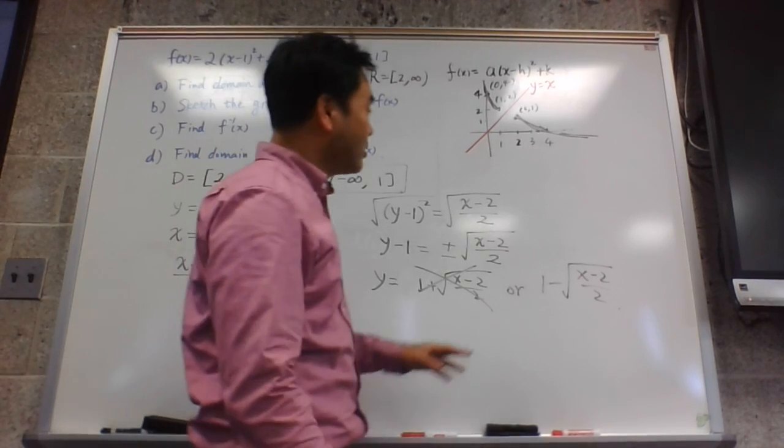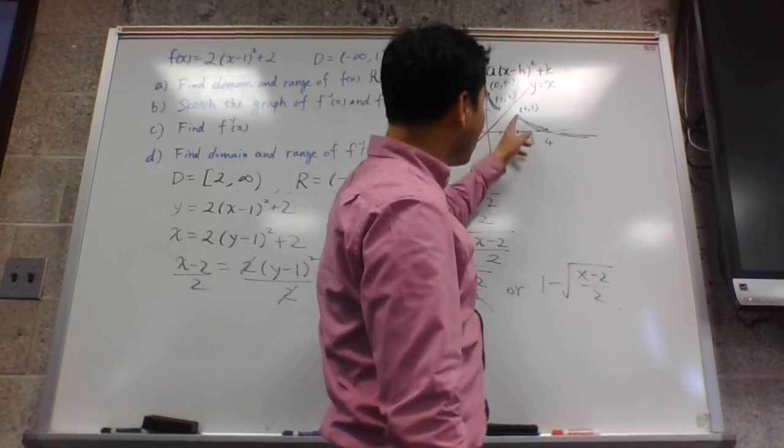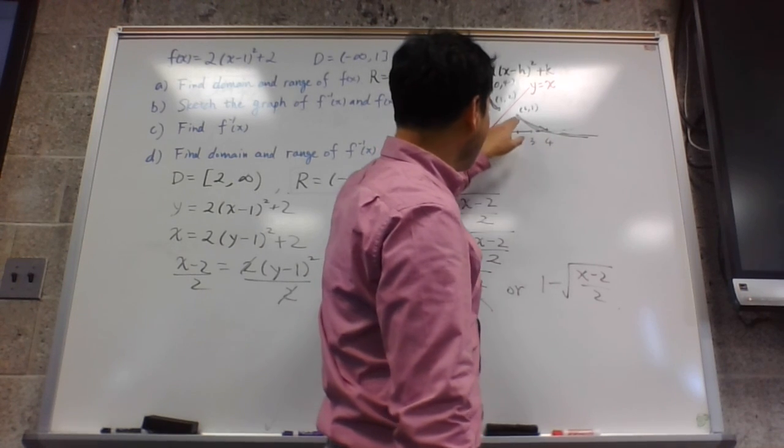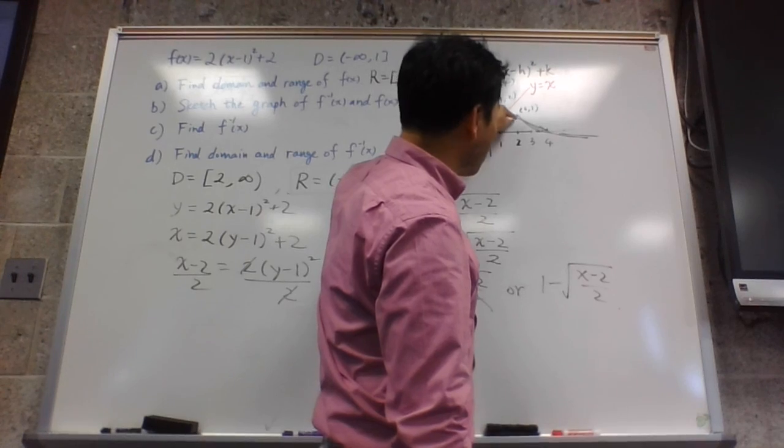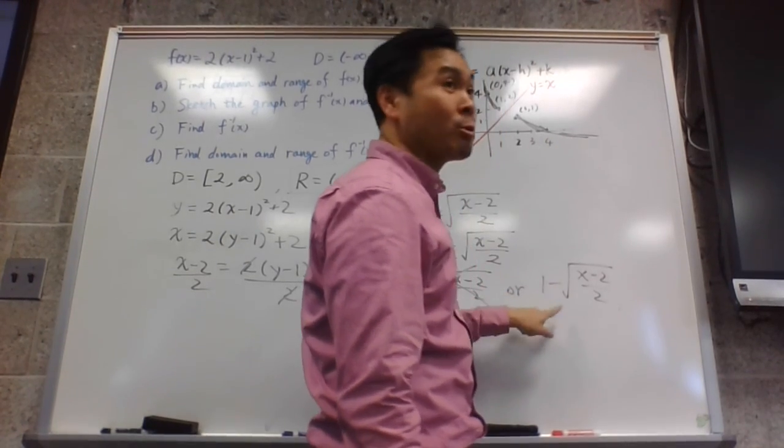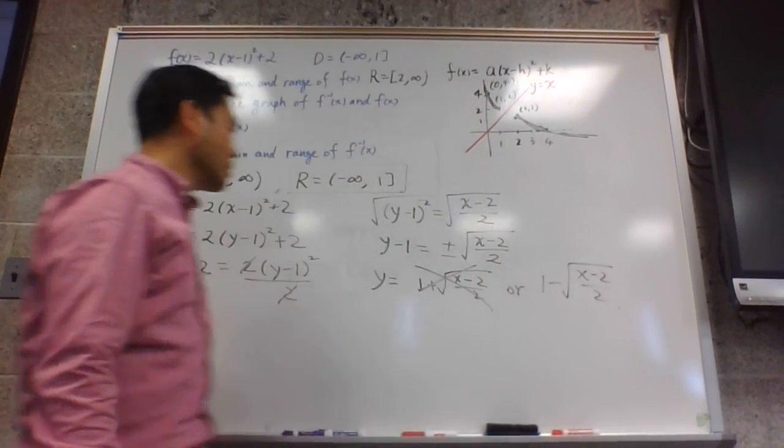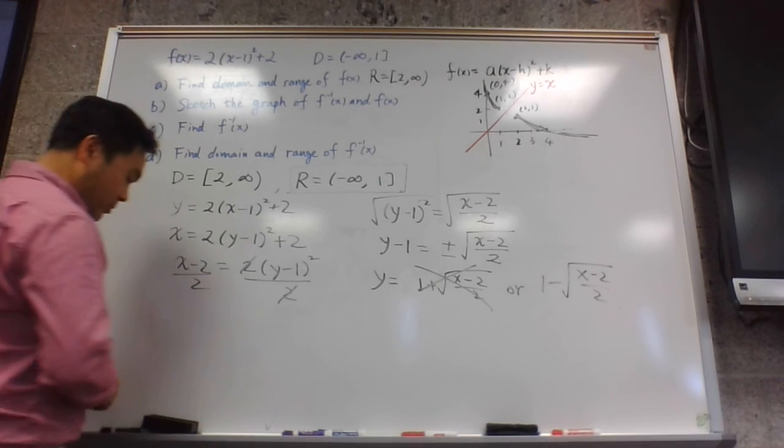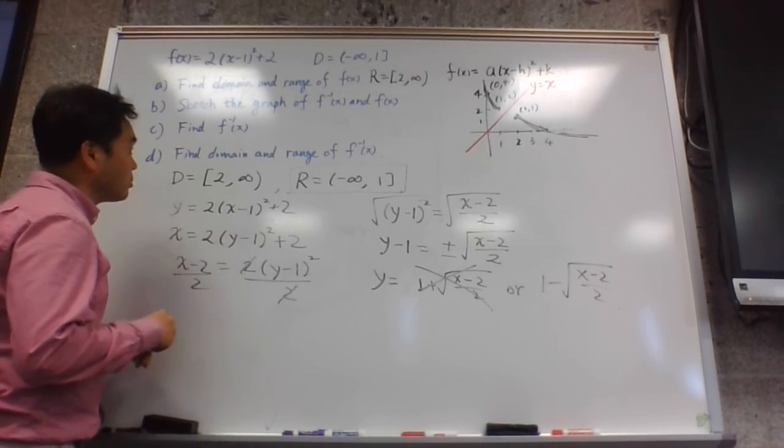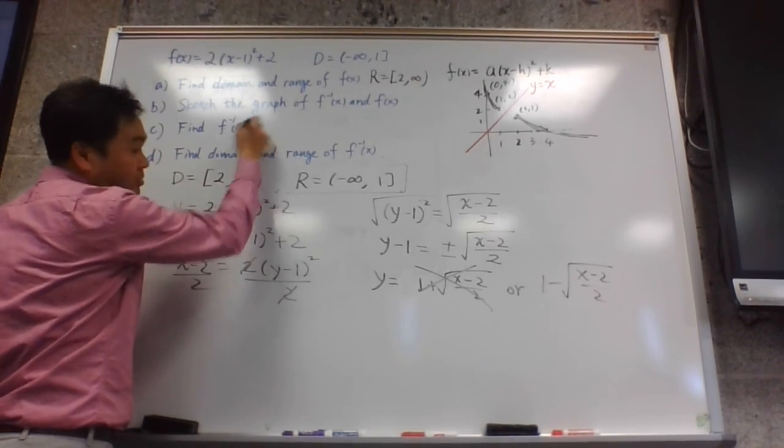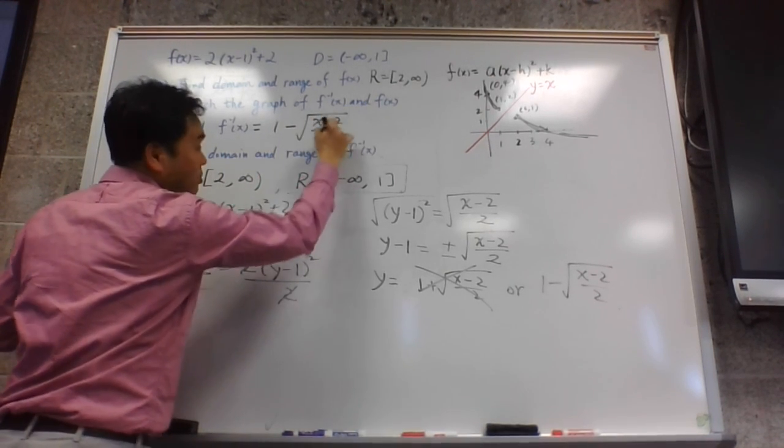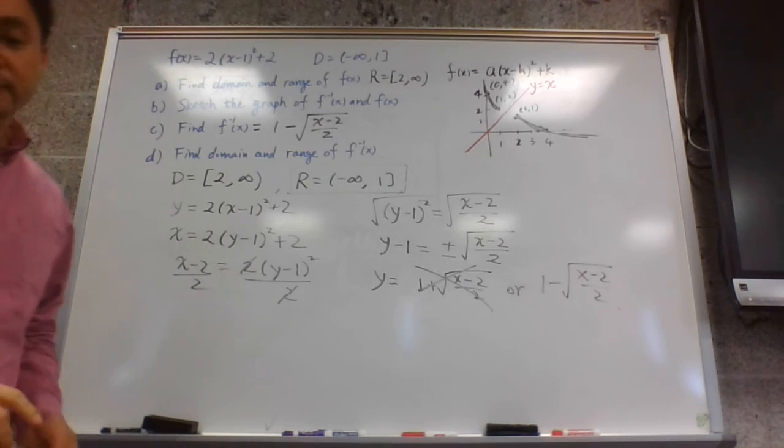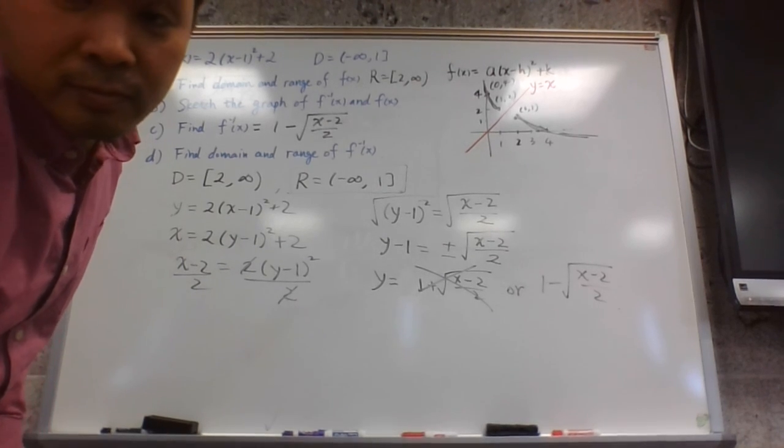And another thing is, if you look at the graph, again this says, the graph shows that the y value is 1 or less. So it's in accordance with this picture. So that's the answer to f inverse of x. So the answer to this is that f inverse of x is 1 minus square root of (x minus 2) over 2. That's how you do it.